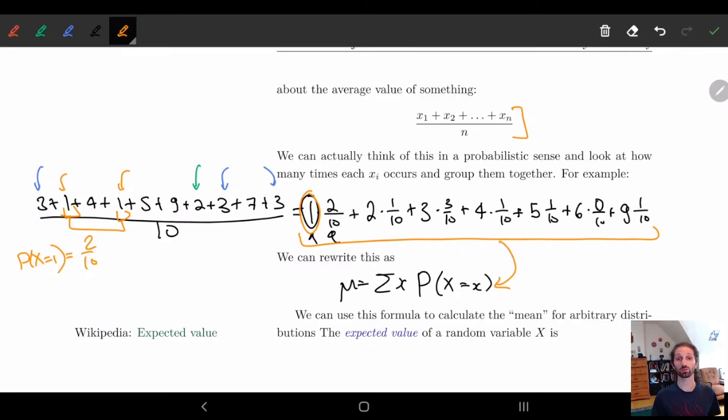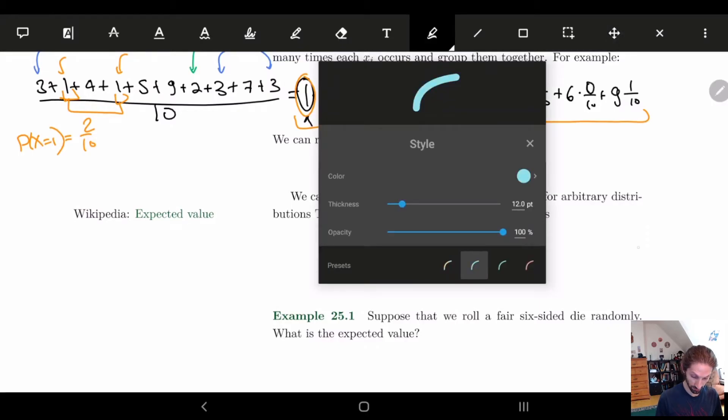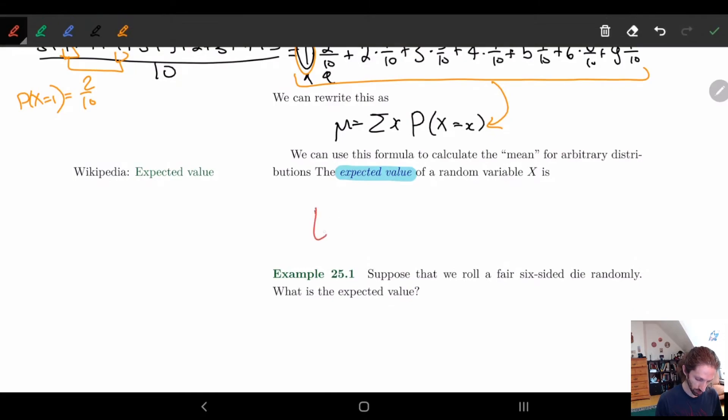And this is basically how we're going to define the expected value. So the expected value for us is just going to be the sum of the expectations. So the expected value of some random variable, we'll denote this as E for expected value. We need some random variable x, and we're just going to sum over all possible x's. So all x, p of x equals x. So that's basically it. So let's kind of look at an example for this.